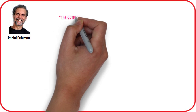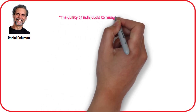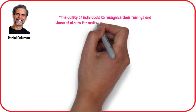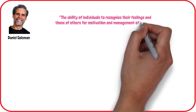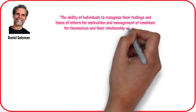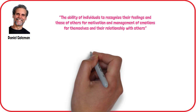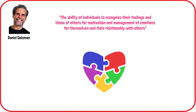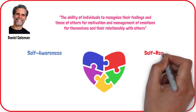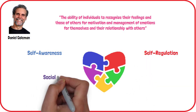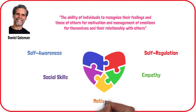Daniel Goleman defines Emotional Intelligence as the ability of individuals to recognize their feelings and those of others for motivation and management of emotions for themselves and their relationship with others. He identifies five core components that contribute to Emotional Intelligence: Self-Awareness, Self-Regulation, Social Skills, Empathy, and Motivation.